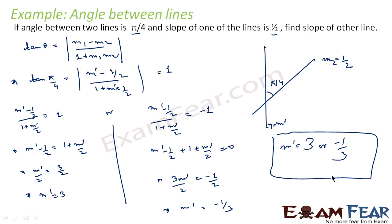What we have done: we used the formula tan theta equals mod of (m1 minus m2) by (1 plus m1 m2) — please note mod is very crucial here. We used theta equals pi by 4 and m2 equals 1/2, and solved to get m dash. We got two values of m dash. When you remove the mod, the right-hand side becomes plus the value and minus the value.